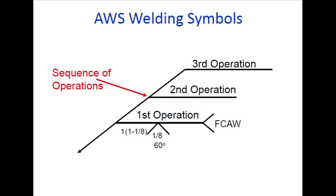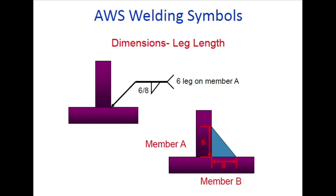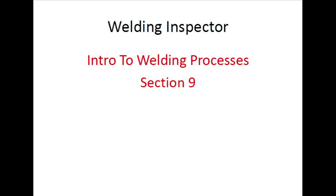First operation, second operation, third operation: first operation is FCAW with 1-inch root opening, groove angle, and 1/8 inch effective throat thickness. Second operation is MT and third operation is RT. So everyone will understand the sequence: FCAW first for joint design, then MT, then RT. Member dimensions - six by eight: member A is 6 mm and member B is 8 mm. This is the welding symbol as per AWS C3.1.